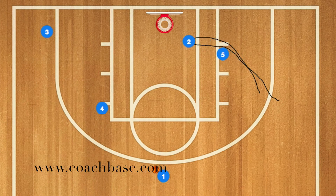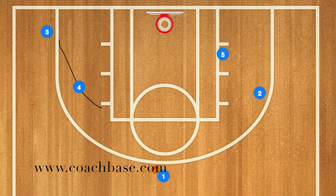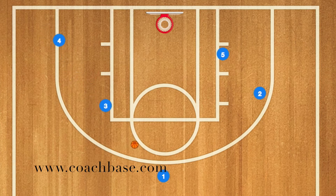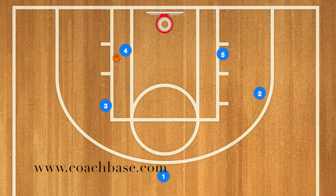Player two will use five as a screen and then use him as a screen again to pop out to the three. If he's not open, four will screen for three, and three will receive the ball. If he doesn't have an open shot, four will roll towards the rim to receive the pass and score.